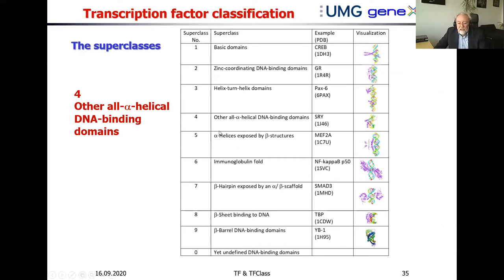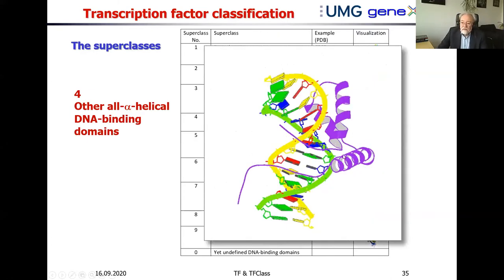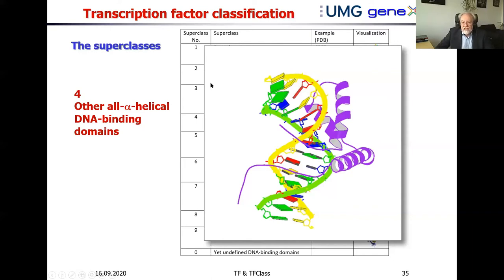There are a few less-populated superclasses. One comprises assemblies of alpha-helical elements only — HMG proteins belong here. They form an L-like structure with two helices in one arm and one helix in the other. Unusually, they do not insert into the major groove but into the minor groove, which is less geometrically suited to an alpha helix. They squeeze in by widening the minor groove so dramatically that the entire DNA double helix axis bends by 90 degrees, inducing a sharp kink — a completely different binding principle.